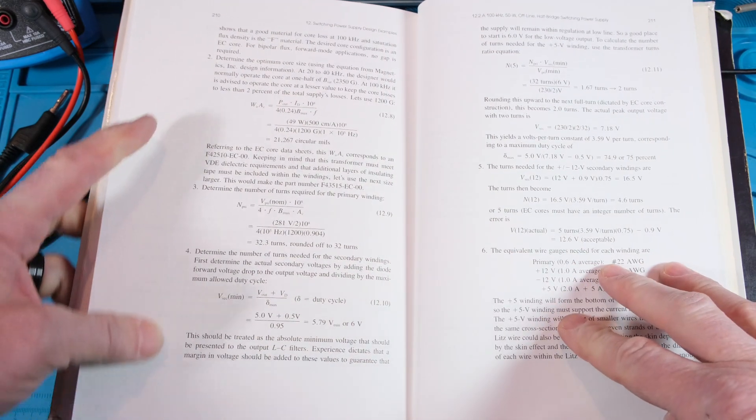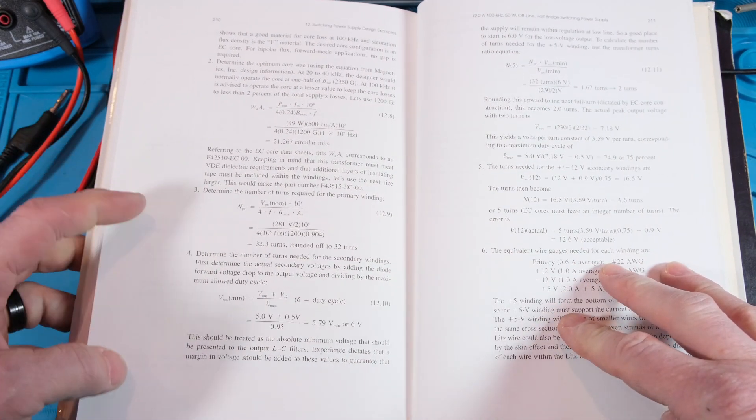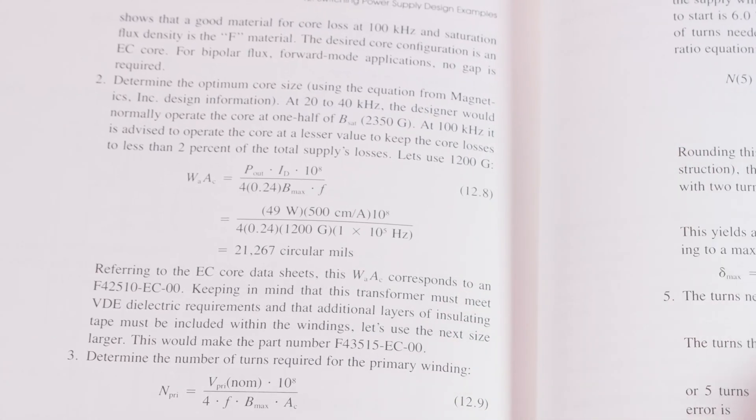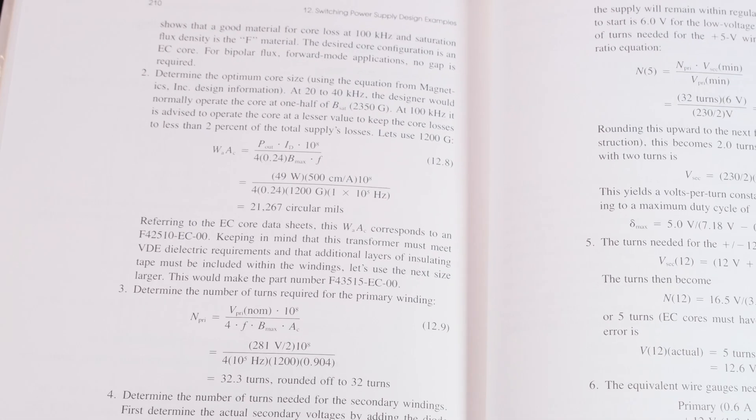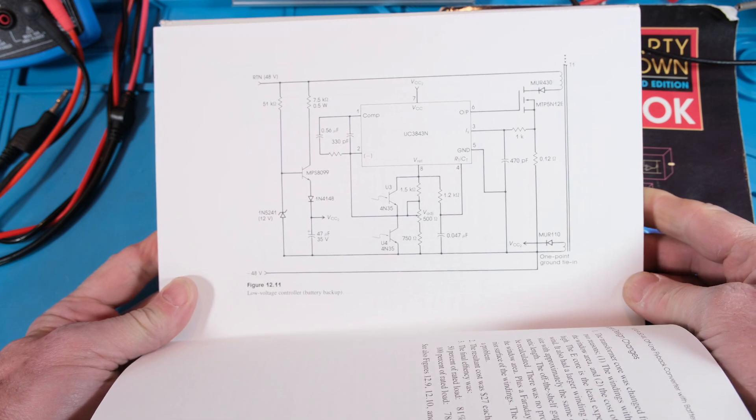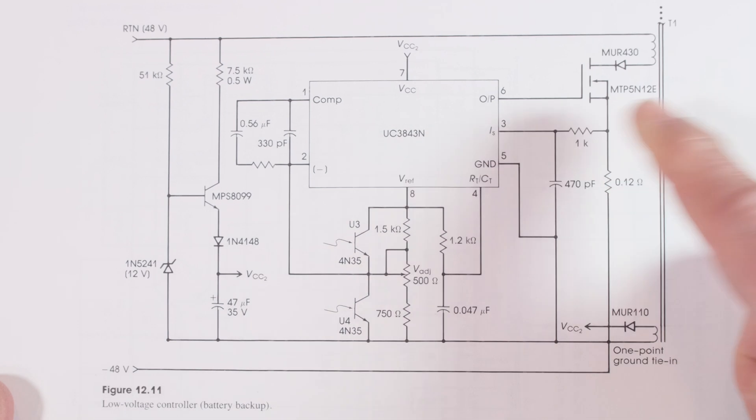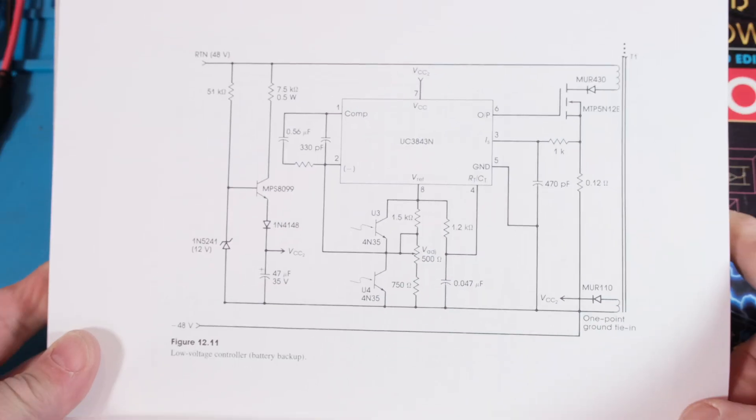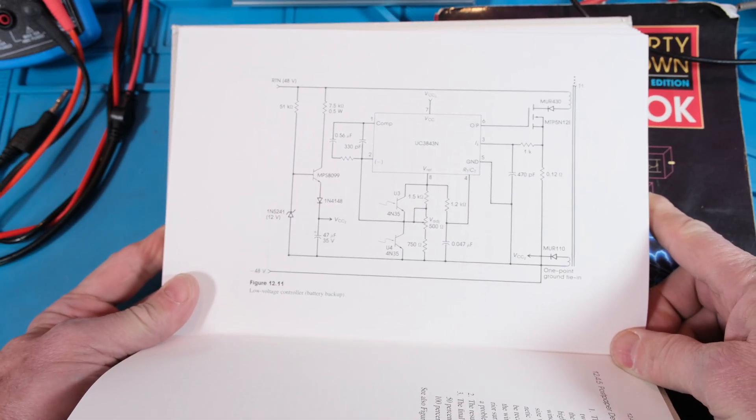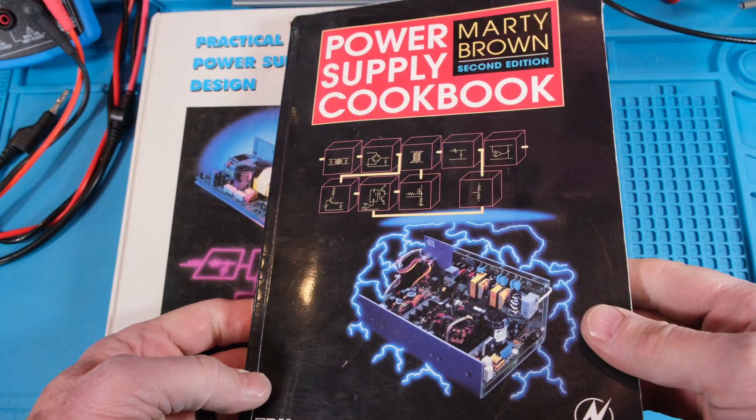Then he has some examples step by step of how he designs the transformer. So it makes it nice, easy to follow. And then he has this example circuit. You can see it's using the famous 3843 chip, been around and still around.